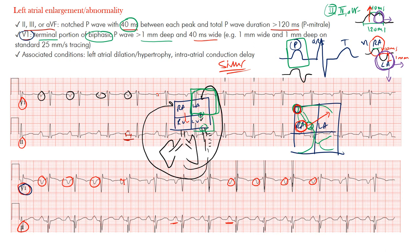In the inferior leads, you're looking for the P mitrale — you can think of the 'M' because of mitral disease. The mitral valve sits between the left atrium and the left ventricle; if it's stenotic, you can have an increase in left atrial size. So P mitrale — the mitral valve is often the culprit — gives that M-shaped P wave in the inferior leads. In V1 you're looking at the biphasic terminal portion having at least one millimeter wide or 40 milliseconds deep.